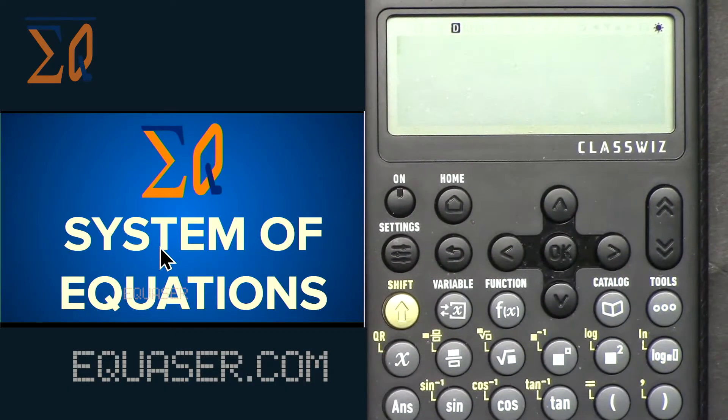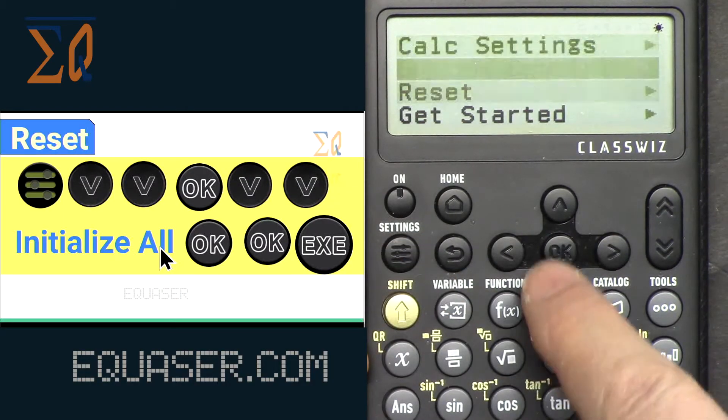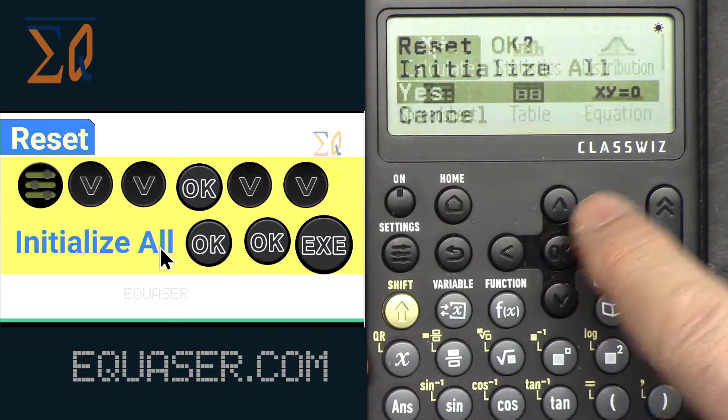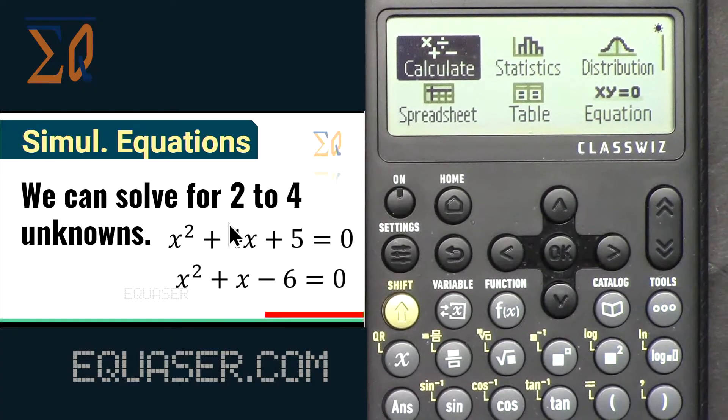Now let's see how we can do system of equations with this calculator. First, let's reset it. Go to Settings, Reset, Initialize All, Yes, and it has been reset fully.